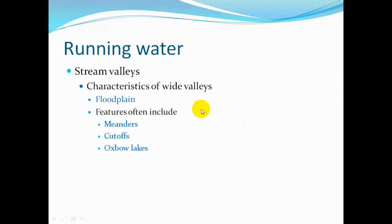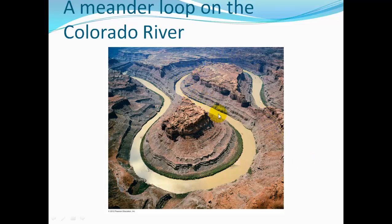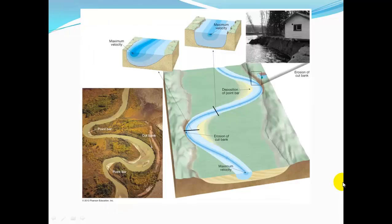In this wide valley is a flood plain — during flood times, the whole valley may flood, creating meanders, cut-offs, and oxbow lakes. Here's an example of a meander loop in the Colorado River, where uplift caused those meanders to become down-cutting meanders. In a straight stream channel, the fastest water is in the middle and up high; but around a bend, the fastest water is on the outside, the slowest on the inside. So you have cutting on the outside and deposition of a point bar on the inside.